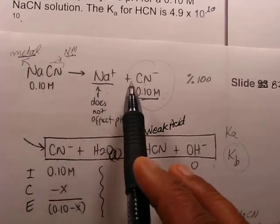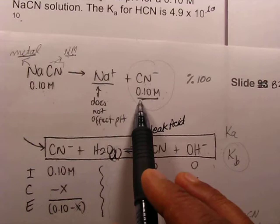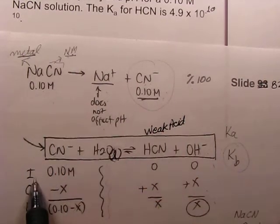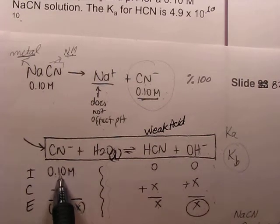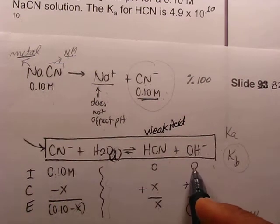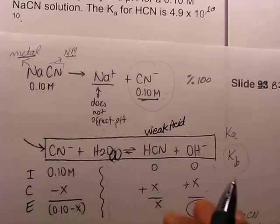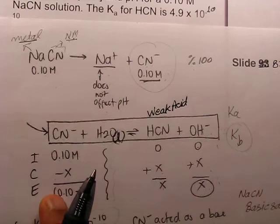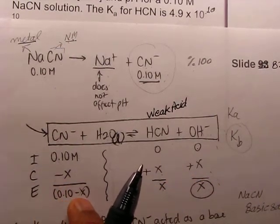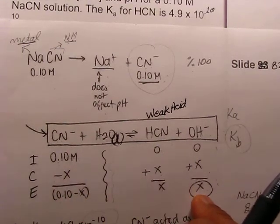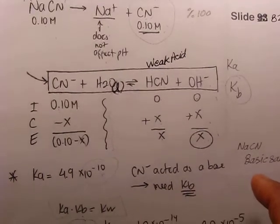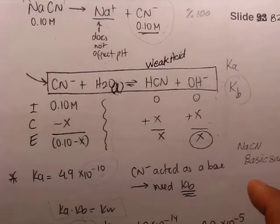The initial concentration of cyanide ion depends on the salt concentration. The salt is 0.1 molar and it dissociates 100 percent, so the initial concentration of cyanide ion is 0.1 molar. Initial concentration of HCN and hydroxyl ion are 0. The change row is minus x, plus x, plus x, giving equilibrium concentrations of 0.1 minus x, x, and x.